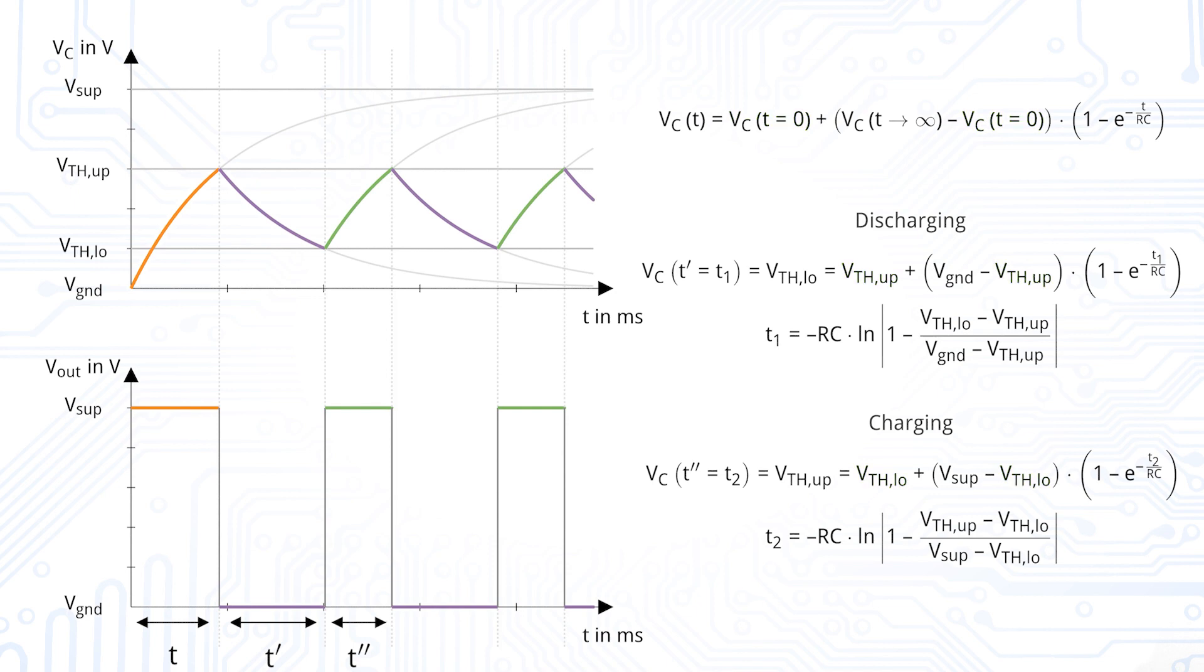The voltage the capacitor tends to be charged to, which is either the upper or lower supply voltage, the voltage when the Schmitt trigger is switching again. So, VC of T equals T1 or T2, which is the upper or lower threshold voltage, depending on whether the capacitor is charged or discharged.